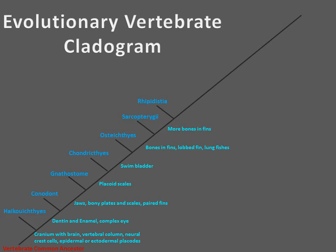Next came rhipidistia, which were predators with a powerful bite, and had some supporting elements, as well as more developed lungs. They are all extinct, but an example would be Tiktaalik. Next came labyrinthodonts, which were the first tetrapods, with a movable neck, weight-bearing girdle, retained branchial arches, and teeth with dentin. They are the first on land, and are all extinct.